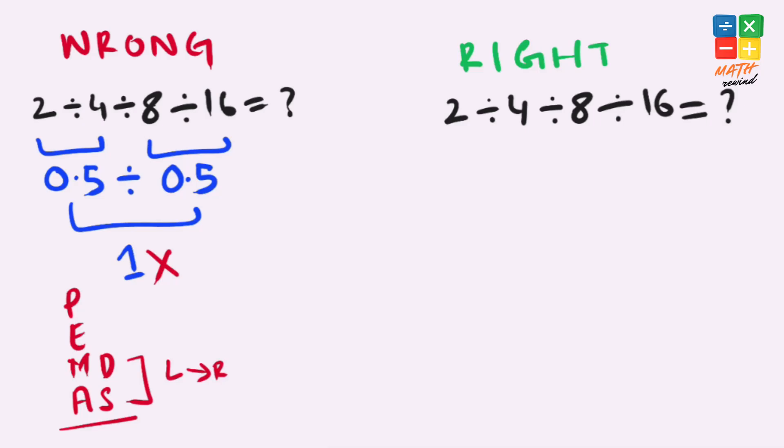Now let's rewind and solve this equation the right way. If you notice, in this equation we only have one operator, which is division, so the only rule that applies here is you must work from left to right.